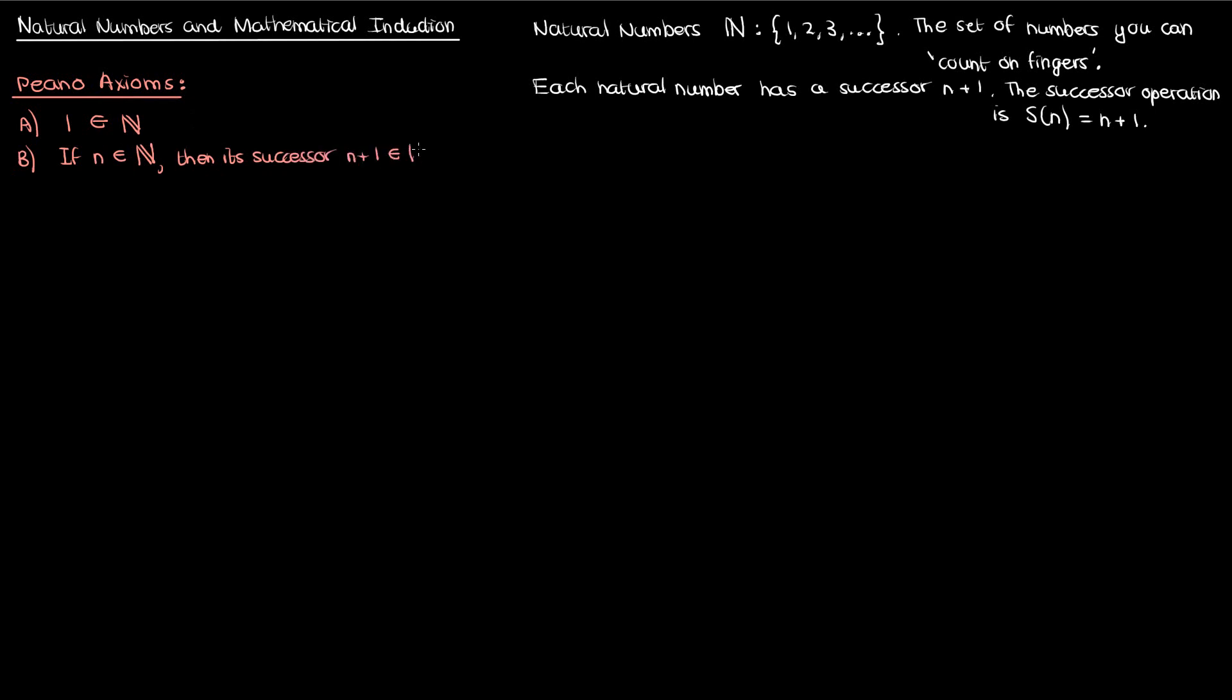The second axiom states that if N is a natural number, then its successor, N plus 1, is also a natural number, which is what we just talked about. You get from one natural number to the next by adding one each time. The third axiom states that 1 is not a successor to any natural number. It is the quote unquote first natural number.